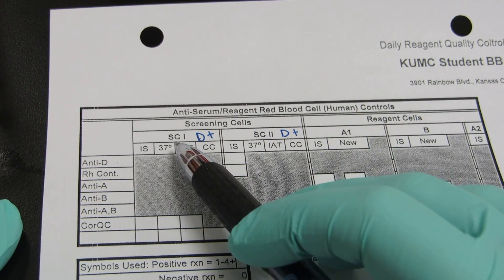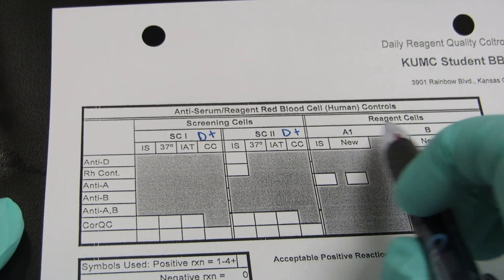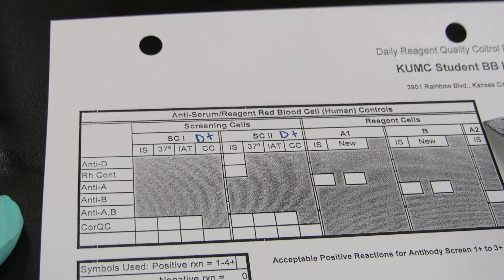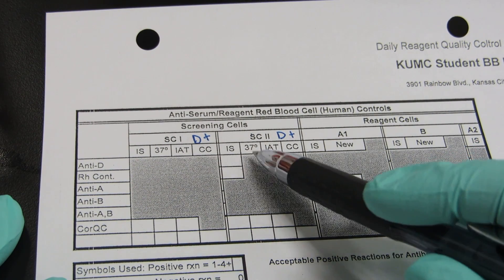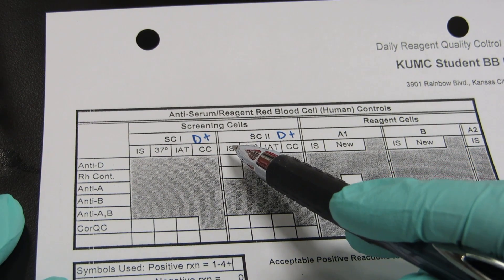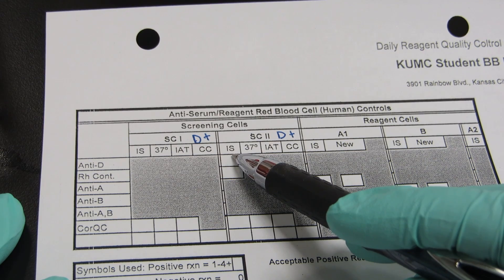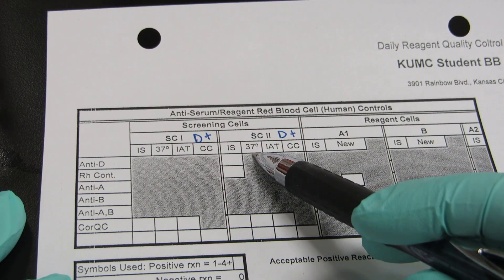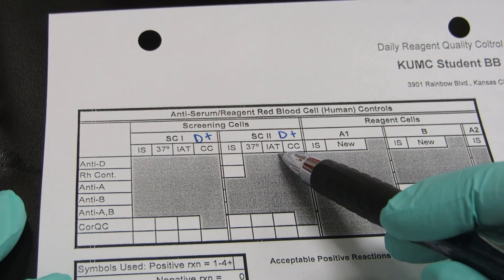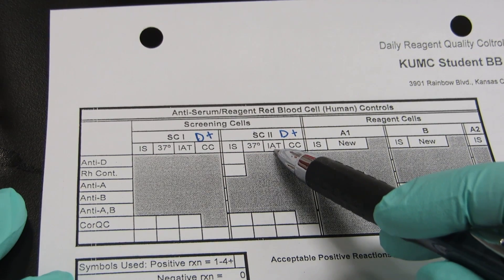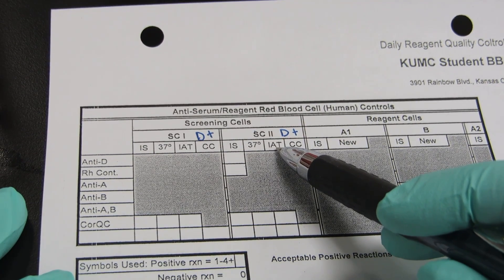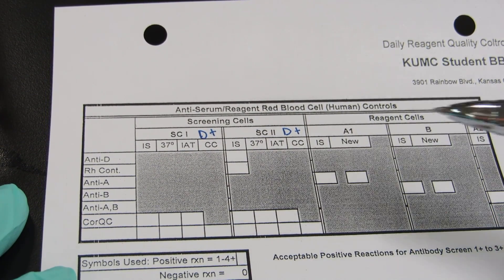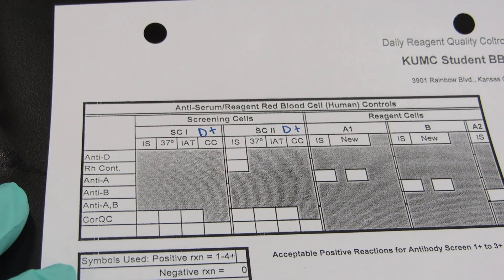Across the top we also have A1 cells, B cells, and A2 cells. We also have phases of reactivity: immediate spin which is IS, 37 degree incubation, and IAT or AHG. This is after the addition of your anti-IgG. CC stands for check cells.